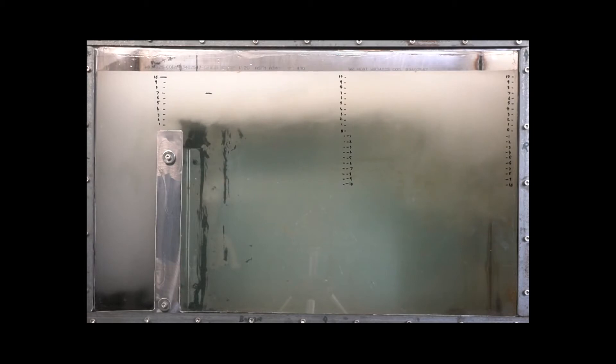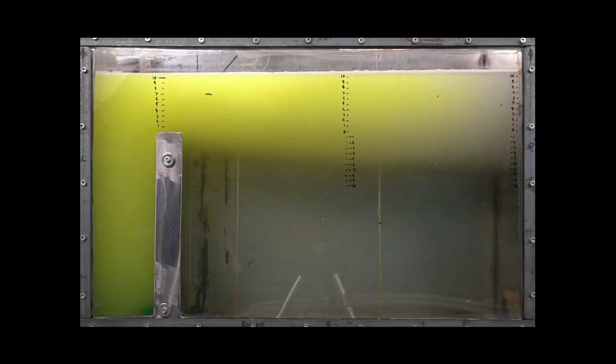The dirty water coming into the DAF tank mixes with these bubbles. The bubbles attach to the particles and remove them to the top of the tank. These particles can then be removed by skimming the surface, and the clean water leaves the tank from the bottom right.